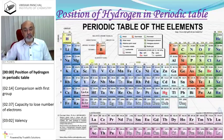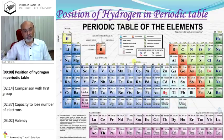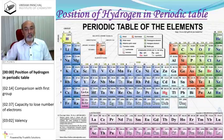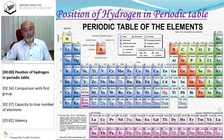In the modern periodic table, the arrangement of elements is related to atomic number. Hydrogen's atomic number is one, therefore the position of hydrogen is first. In this modern periodic table, you will find seven periods and eighteen groups, and this is related to their electronic configuration.